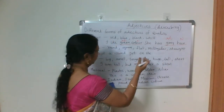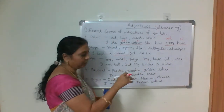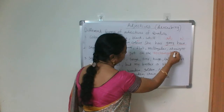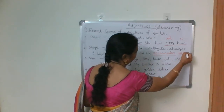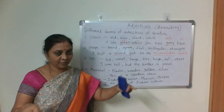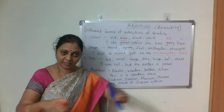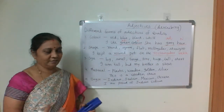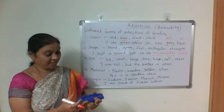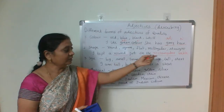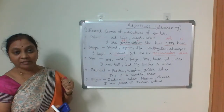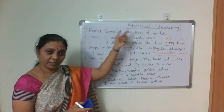You can describe the shape of objects too. For example: 'I kept a round pot on the rectangular table.' Rectangular and round both talk about the shapes — so these are adjectives of shape.